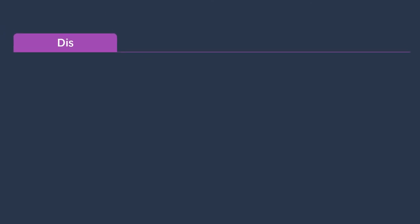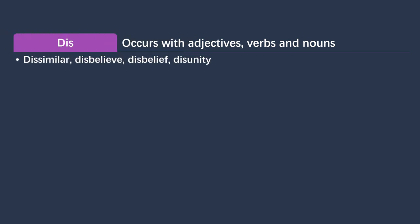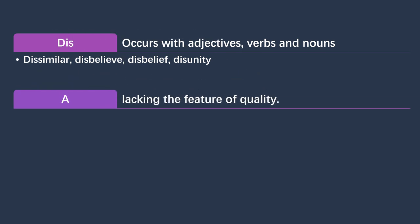Another negative prefix is 'dis,' which mostly occurs with adjectives, verbs, and nouns. An example with an adjective is 'dissimilar' — 'similar' is an adjective and we add 'dis' to get 'dissimilar.' An example with a verb is 'disbelieve,' where 'believe' is a verb. Examples with nouns are 'disbelief' and 'disunity.'